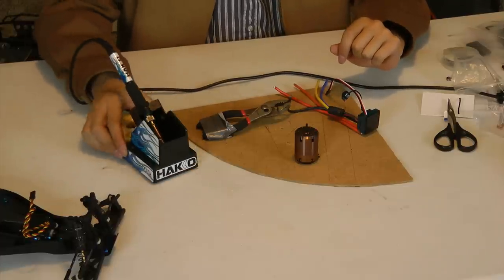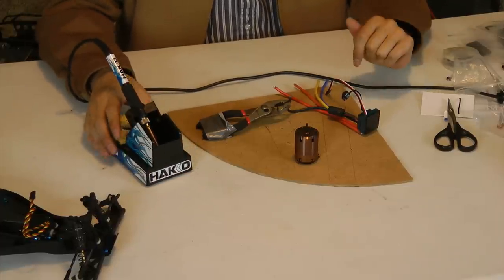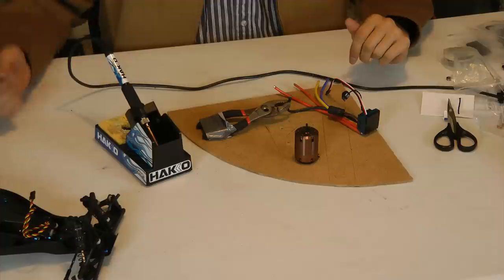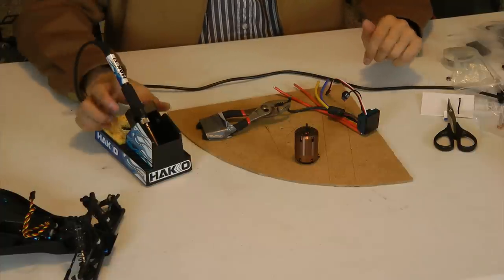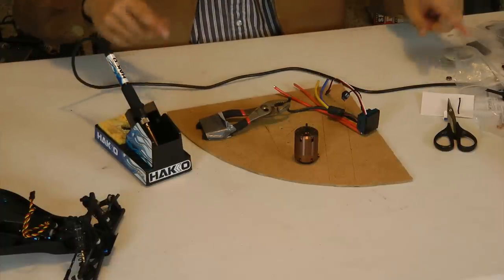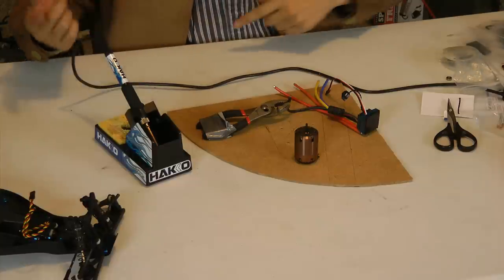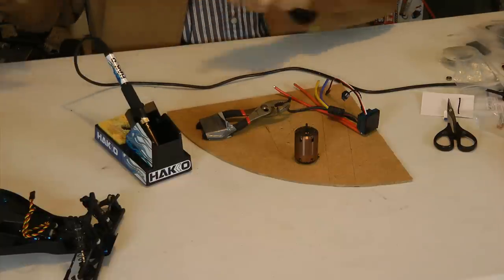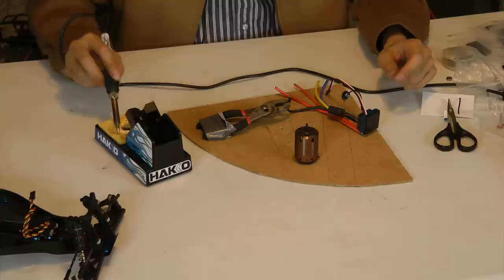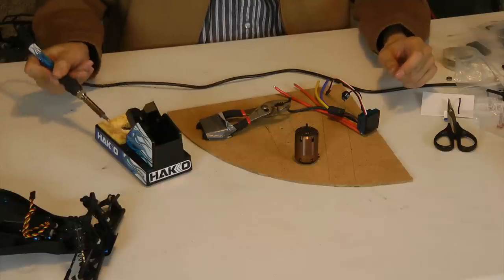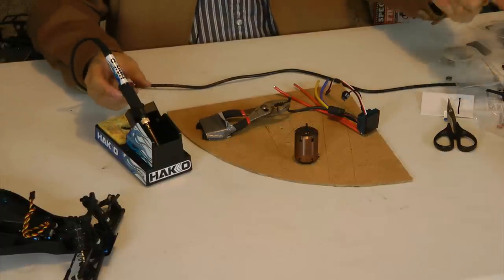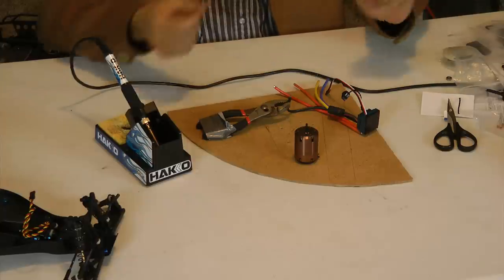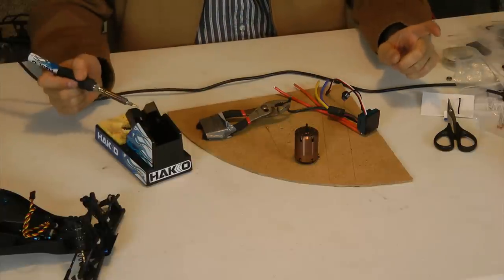I have my soldering iron using the Hakko temperature control soldering station here. You can see it's kind of running a little awkward. I have the cable running from the left to the right. Normally you'd want the cables out of the way. This is because we don't have a long enough extension cord so let's go ahead and get started here.